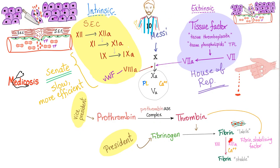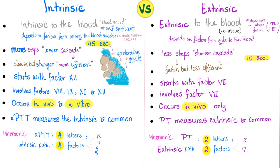Here is the coagulation cascade. Fibrin is the goal. Factor 13 stabilizes the fibrin. Fibrin comes from fibrinogen (factor 1). Thrombin (factor 2) converts fibrinogen into fibrin; thrombin came from prothrombin. To activate prothrombin to thrombin, we need factors 5 and 10, calcium, and phospholipid. To activate factor 10, we can go via the extrinsic pathway using factor 7, or via the intrinsic pathway using factors 12, 11, 9, and 8. The intrinsic pathway requires something intrinsic to the blood — high molecular weight collagen, kallikrein, or platelet factor 3. The extrinsic pathway needs tissue factor from outside the vessel. The intrinsic pathway takes about 45 seconds; the extrinsic pathway takes about 15 seconds.